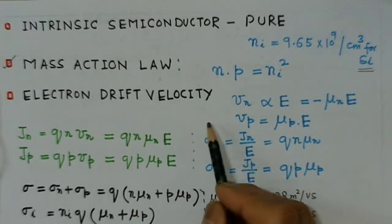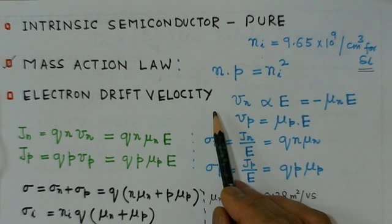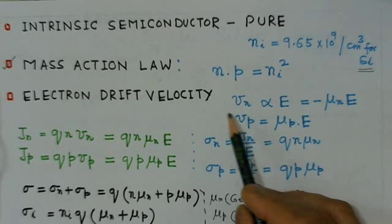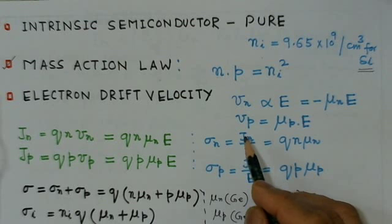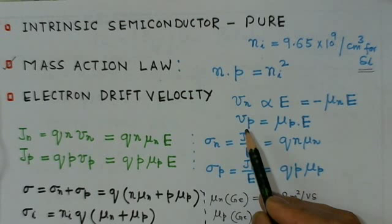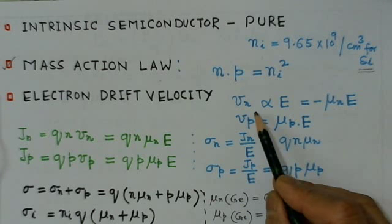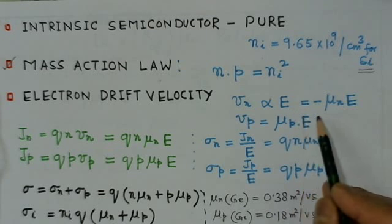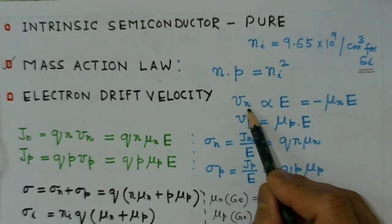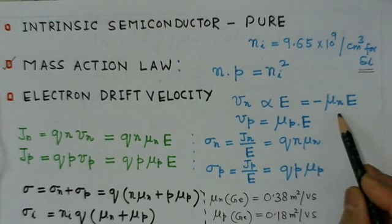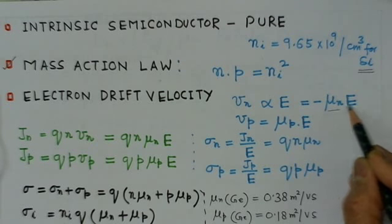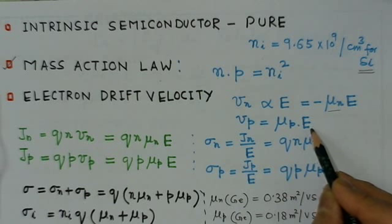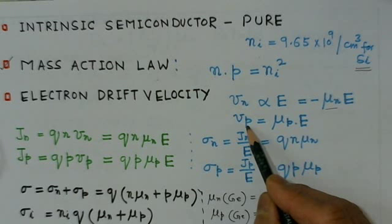The movement of carriers occurs by two mechanisms: drift and diffusion. Drift shows the flow of current by drift mechanism — when an electric field is applied to a semiconductor, carriers drift. The drift velocity Vn is proportional to the electric field E: Vn = −μn·E, and for holes, Vp = μp·E.